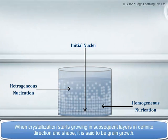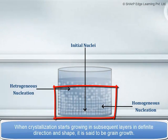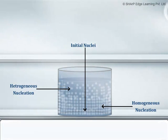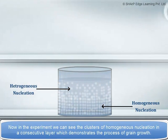When crystallization starts growing in subsequent layers in a definite direction and shape, it is called grain growth. Now in the experiment, we can see the clusters of homogeneous nucleation in consecutive layers which demonstrates the process of grain growth.